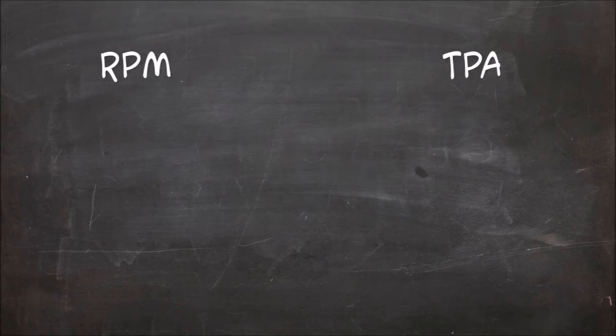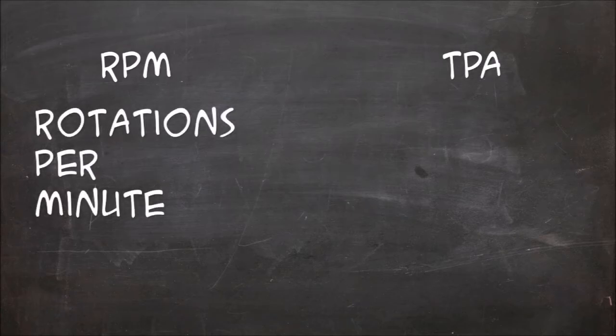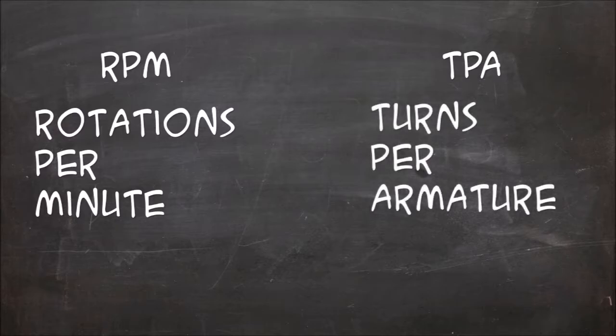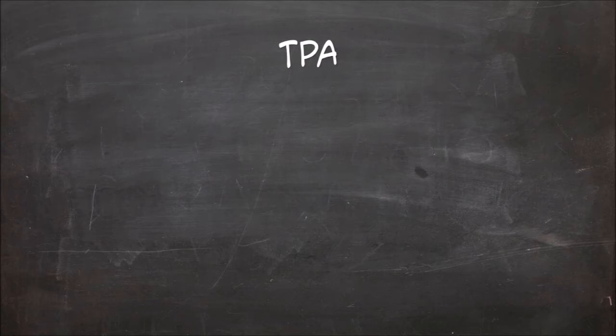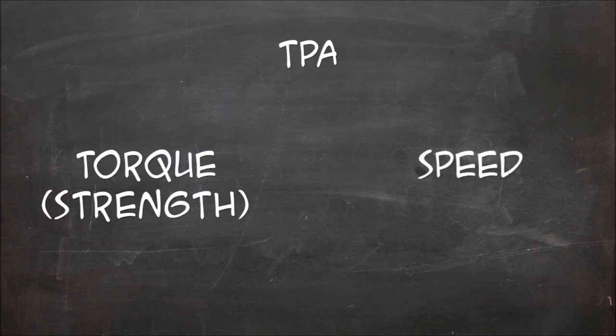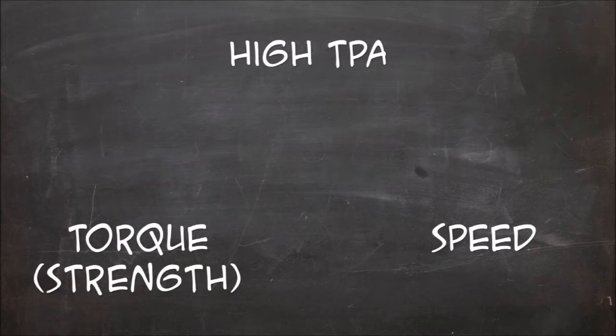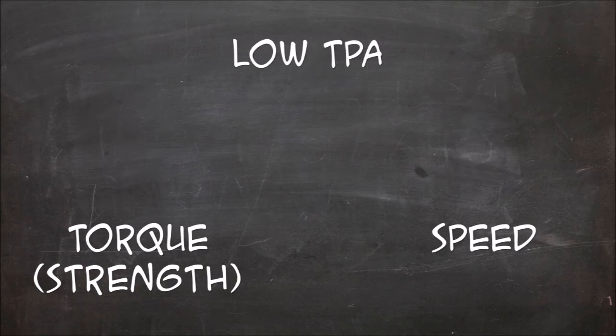TPA means more to your decision for a motor than RPM, honestly. The TPA is determined by the length of the armature and the amount of wire wraps around the motor magnets, and some math that goes beyond what is meant for this video. The TPA will determine the torque and speed of the motor. High TPA means high torque but lower speed. Low TPA means high speed but lower torque.